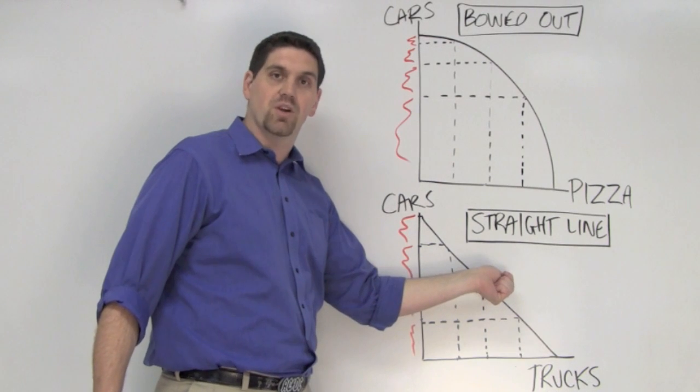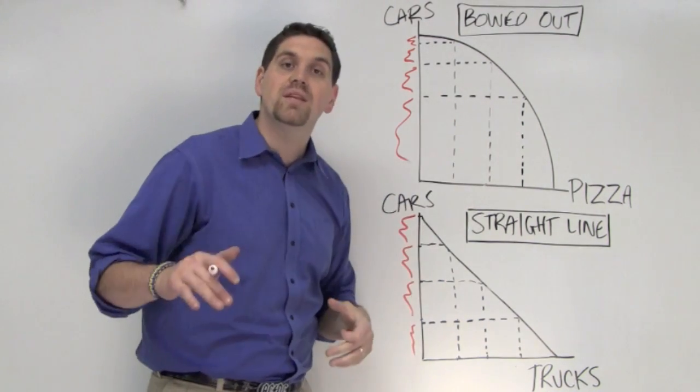This is a constant opportunity cost production possibilities curve. This is a bowed out or increasing opportunity cost production possibilities curve.